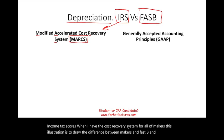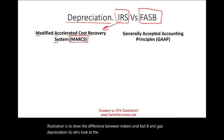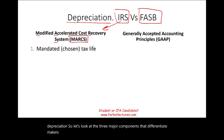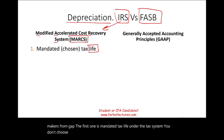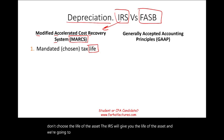Let's look at the three major components that differentiate MACRS from GAAP. The first one is mandated tax life. Under the tax system, you don't choose the life of the asset — the IRS gives you the life of the asset, as we're going to see on the next slide.